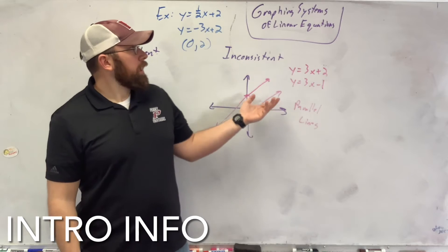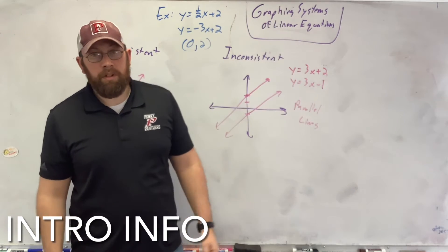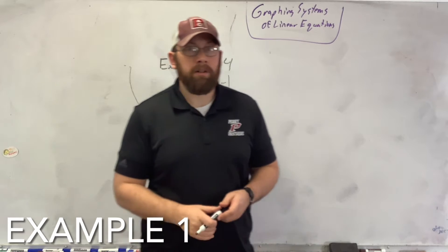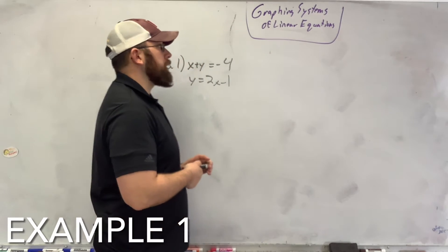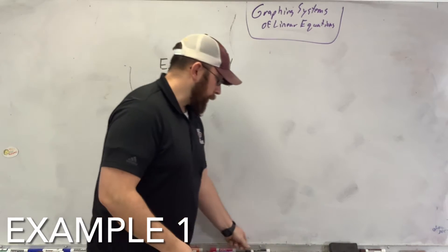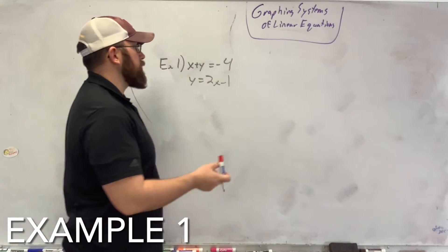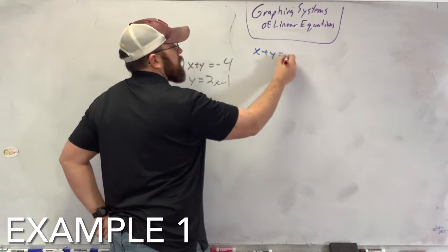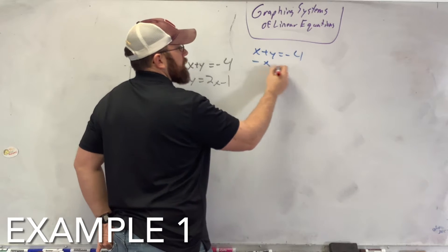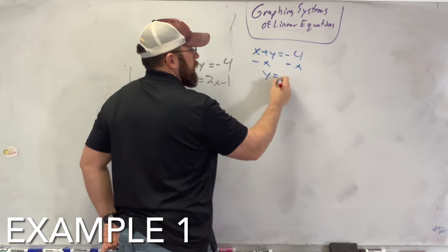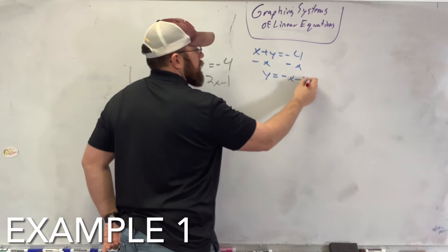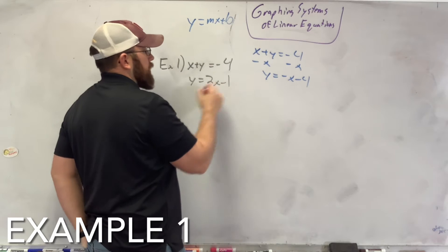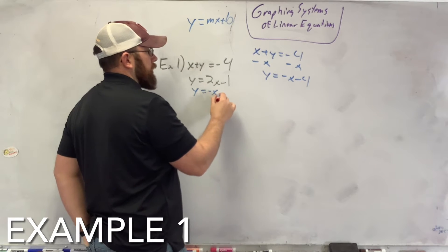Now we are actually going to graph systems of linear equations. The first most important thing you need to know is that both equations have to be in slope-intercept form. So here I have x plus y equals negative 4, and I have to switch this over to slope-intercept form, which is y equals mx plus b.